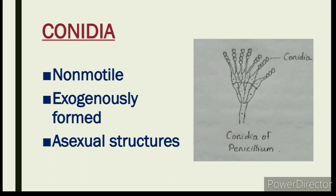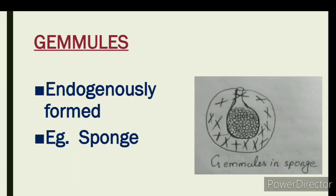How is conidia exogenously formed? Exo means outside. Conidia are formed on the outer surface of the organism. Next is gemmules. Gemmules are endogenously formed asexual reproductive structures. For example, sponges. Endogenously means formed from within — inside the body.